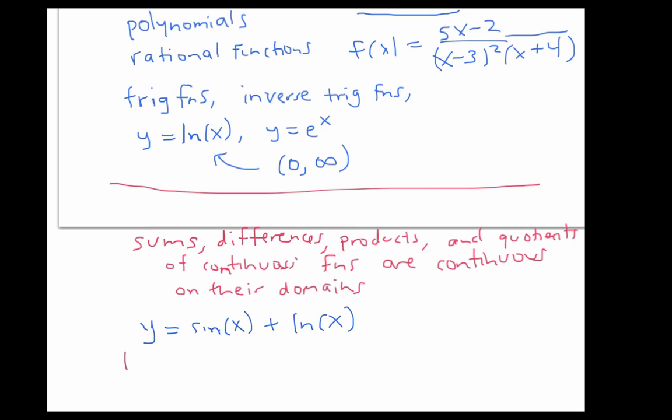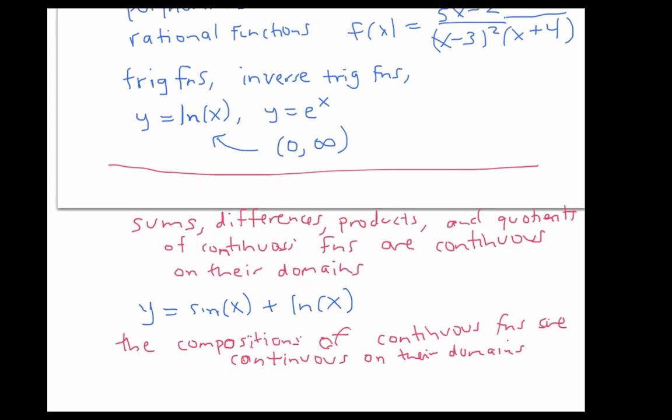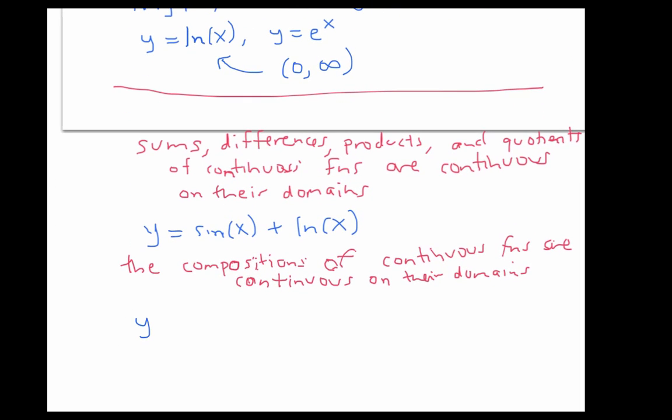The compositions of continuous functions are continuous on their domains. So for example, y equals ln of sine of x is continuous where defined, which turns out to be a bunch of disjoint intervals where sine is positive.